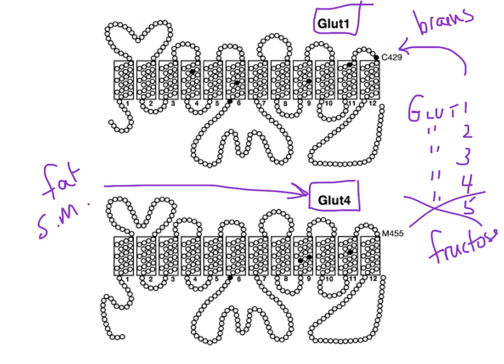These particular receptors have 12 transmembrane passes — they are 12-pass transmembrane proteins.